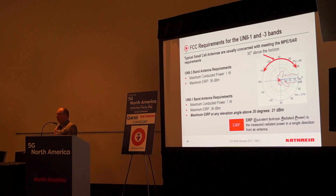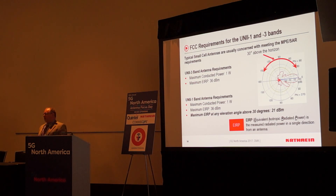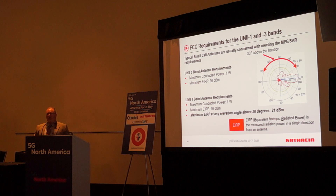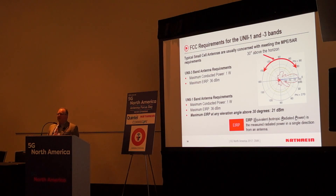That's pretty small compared to a macro, but for a small cell that's sort of typical. A typical small cell is anywhere from 6 to 10 dBi. So it's on the bottom end of it, but it's fairly typical.